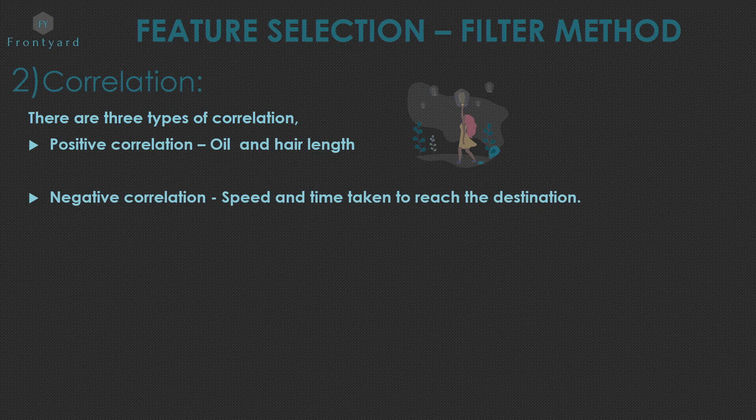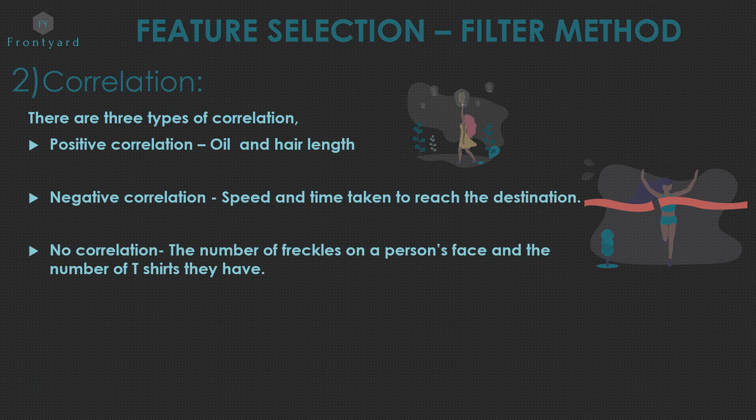Next is negative correlation. If value of one variable increases, the other will be decreased. The inverse relationship. Like speed and time taken to reach the destination. If you take high speed, the time taken to reach the destination will be low. Next is no correlation. The number of freckles on a person's face and the number of t-shirts they have. That means there is no relationship between the number of t-shirts they have and number of freckles on a person's face.